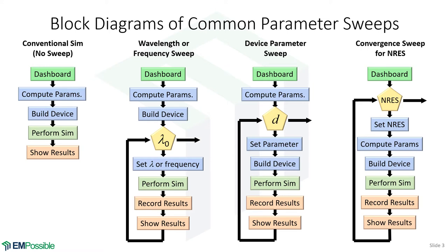You can notice a theme: these are still the basic steps of the high-level algorithm — it's just a matter of what we move inside the loop versus outside. We want to calculate as much as possible outside the loop so we don't slow down our parameter sweep. We only move inside the loop what is actually changing during that sweep.